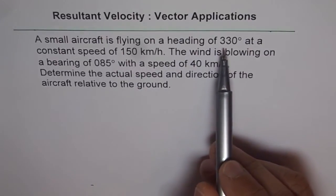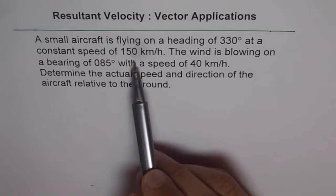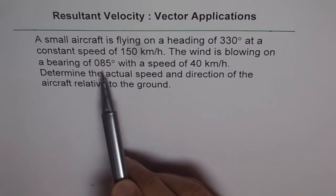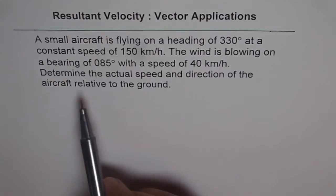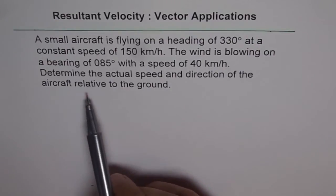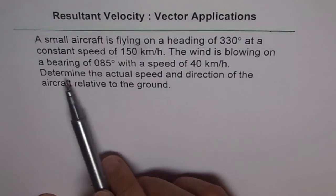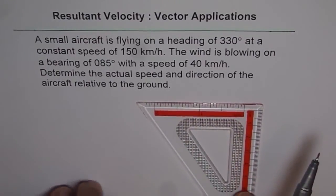The question before us is: a small aircraft is flying on a heading of 330 degrees at a constant speed of 150 kilometers per hour. The wind is blowing on a bearing of 085 degrees with a speed of 40 kilometers per hour. Determine the actual speed and direction of the aircraft relative to the ground. When you read it for the first time you understand that the directions are bearing angles, measured from north clockwise.